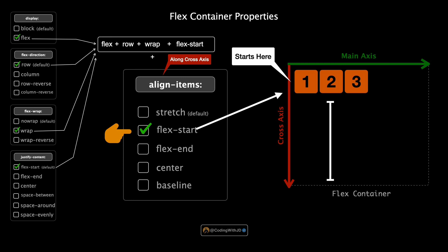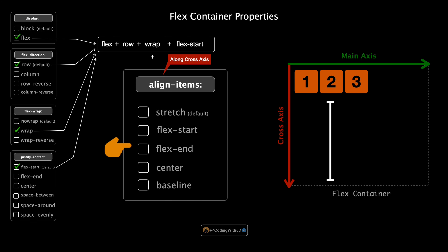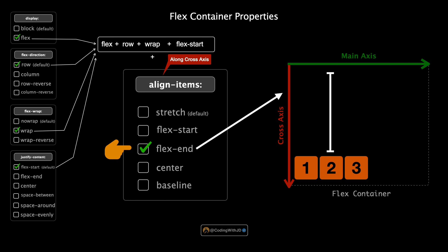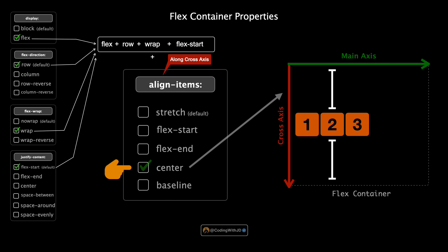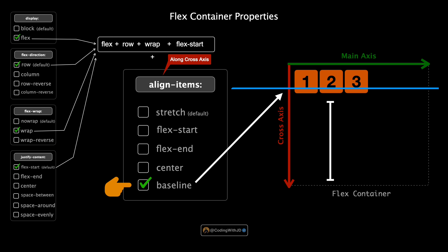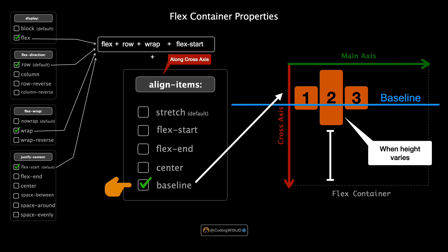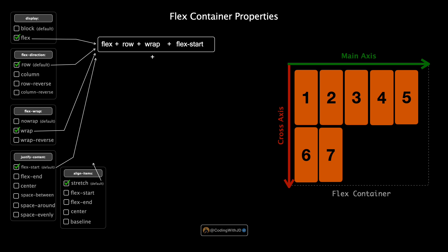Setting align-items to flex-start aligns all items to the start of the cross axis — in a row, that means the top of the container. With flex-end, items are aligned to the end of the cross axis, which is the bottom of the container in a row. Switching to center places all items in the middle of the cross axis — a popular choice for vertically centering content. Lastly, baseline aligns items based on the baseline of the text within them, particularly useful when flex items contain text of various sizes.